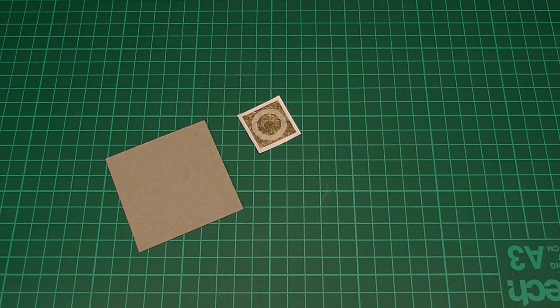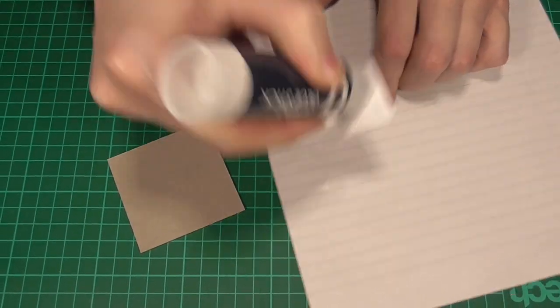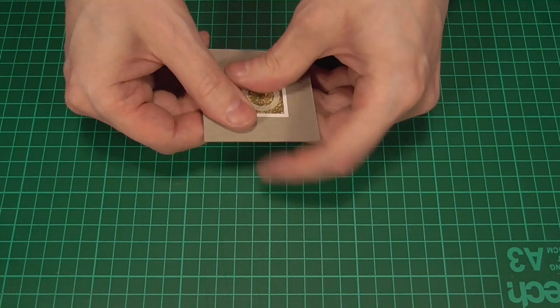And we'll also cut out one of these pieces from the PDF. Then we'll apply some glue to the back of the paper piece, and stick that to the middle of the cardboard piece. There you go.